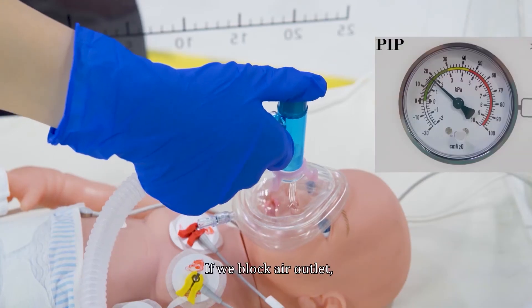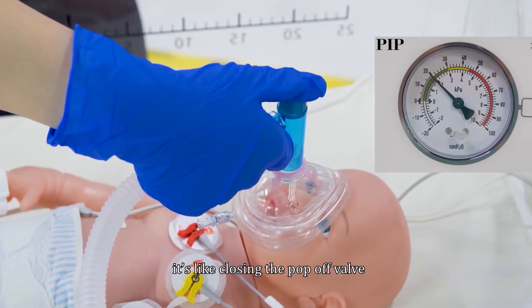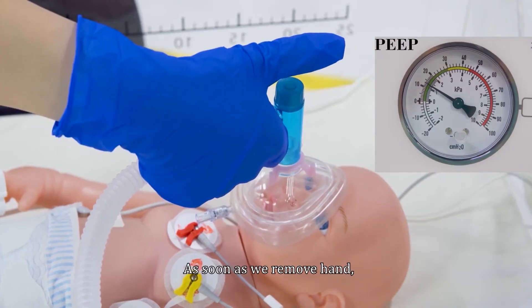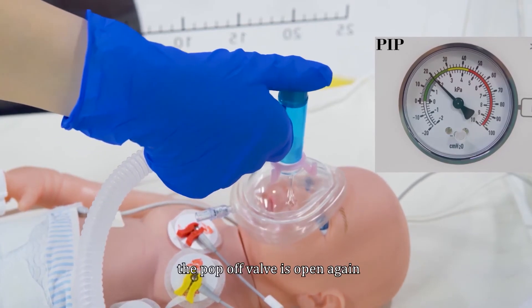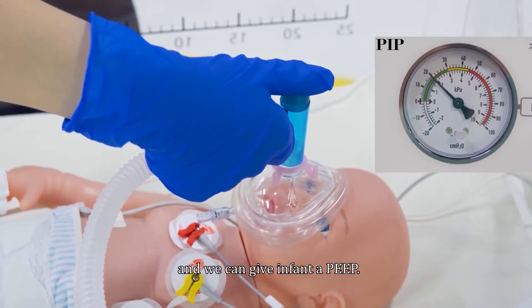If we block air outlet, it's like closing the pop-off valve, and we can give infant a PIP. As soon as we remove hand, the pop-off valve is open again, and we can give infant a PEEP.